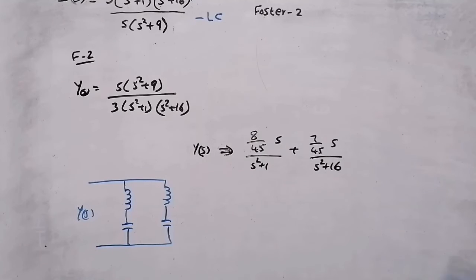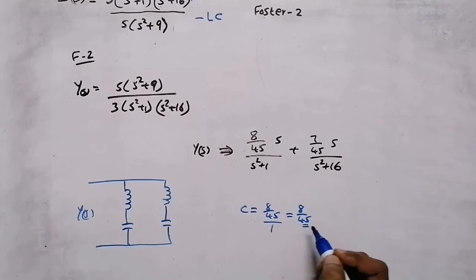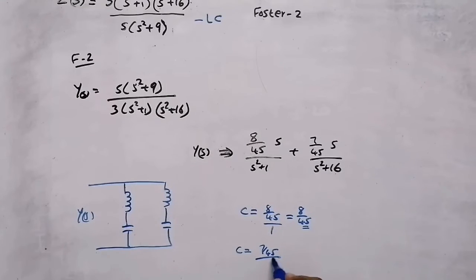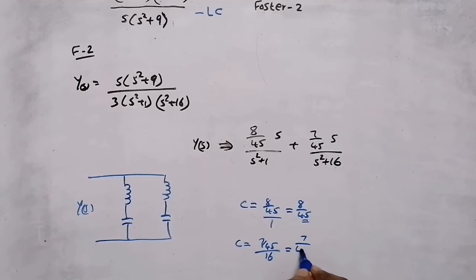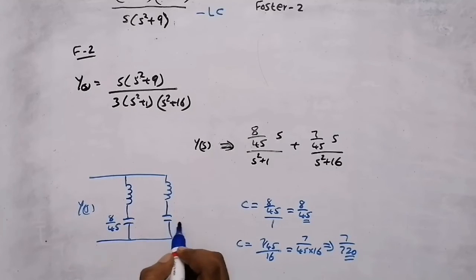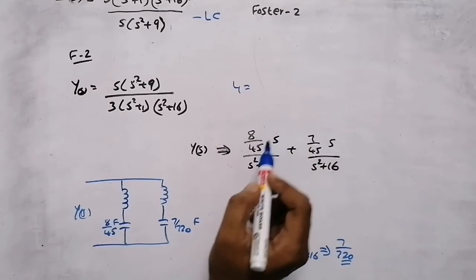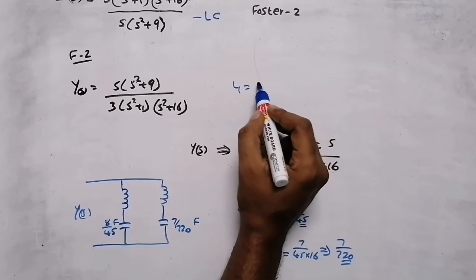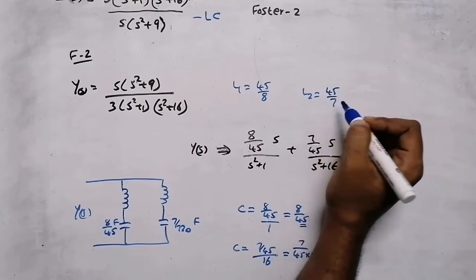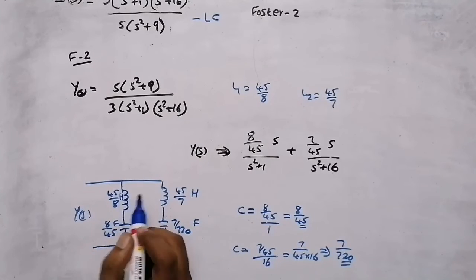For Foster Form 2 component values: the capacitor value equals the coefficient near s. For the first branch, C1 equals 8/45 divided by 1, which is 8/45 Farad. For the second branch, C2 equals 7/45 divided by 16, which equals 7/720 Farad. For the inductors: L1 is the reciprocal of (8/45 times 1), so L1 equals 45/8 Henry, and L2 equals 45/7 Henry.